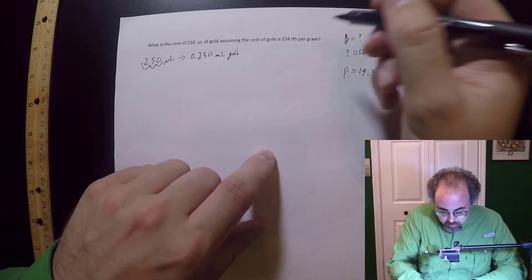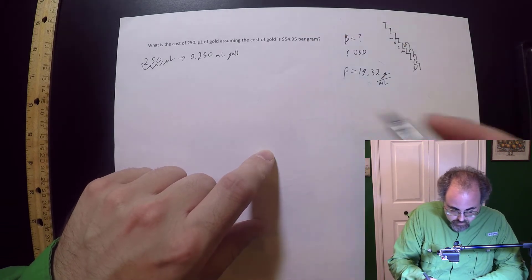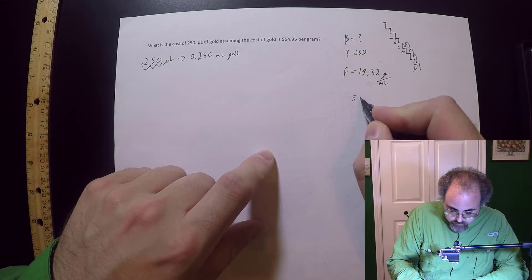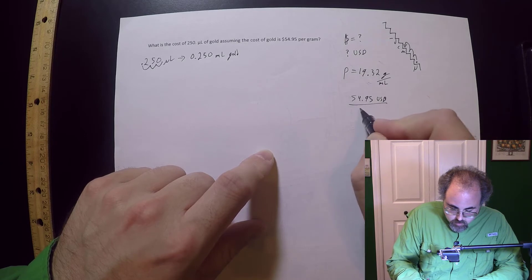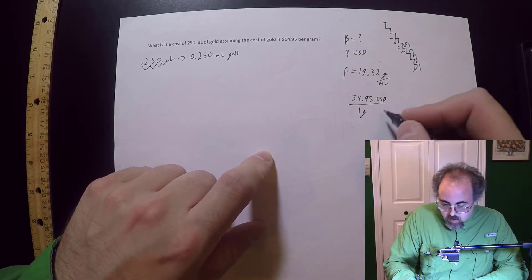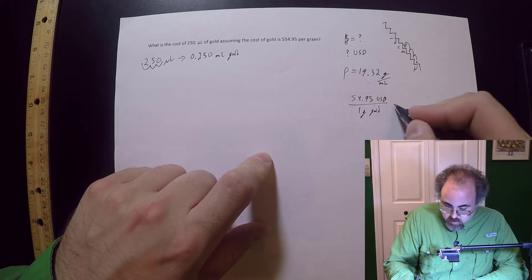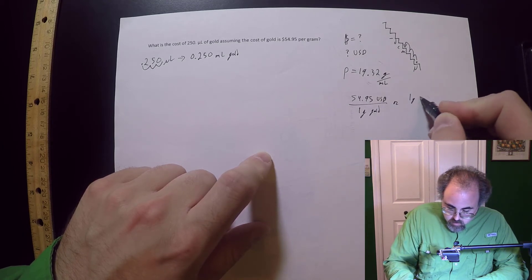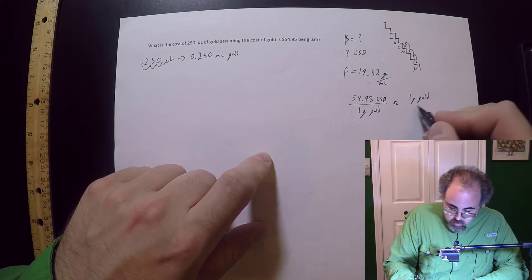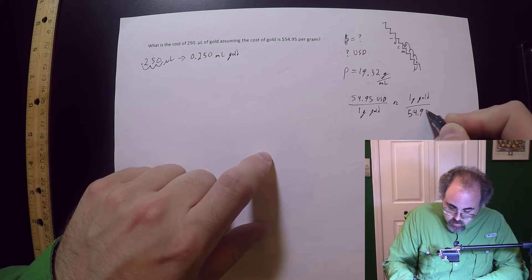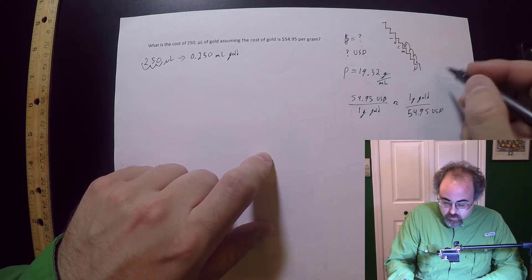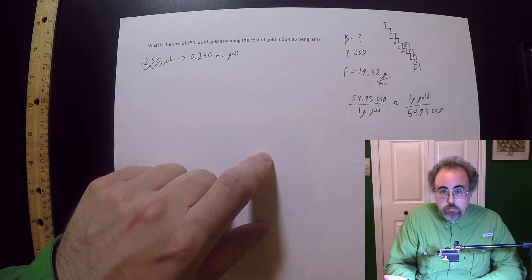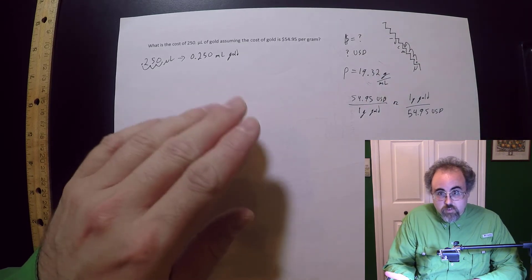Okay. Almost forgot. I've got another conversion factor right here and that is saying 54.95 USD per one gram gold or every $54.95 USD. And of course this is also 19.32 or 1 over 19.32.